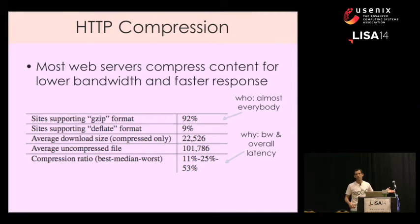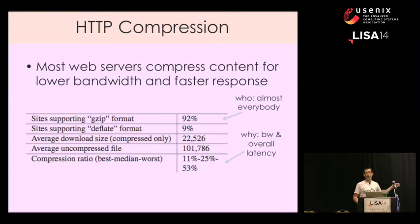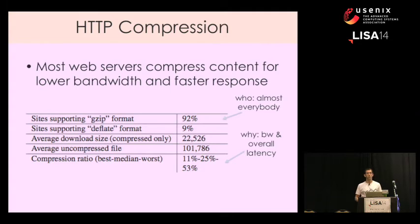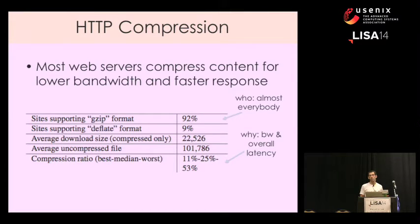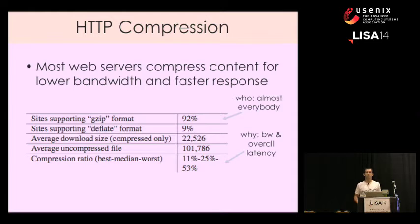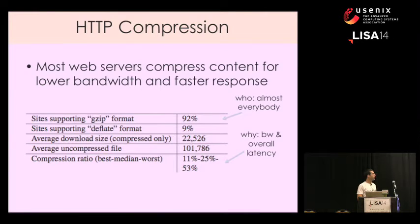Almost all the websites in the world use HTTP compression. We analyzed the top 500 from the Alexa list and found that 92% of web servers are actually running GZIP compression, which is the most popular one. The average HTML is about 100 kilobytes — we're talking about the main pages of all those sites — and they are usually compressed to about a 5 to 1 ratio, saving about 80% of the bandwidth.